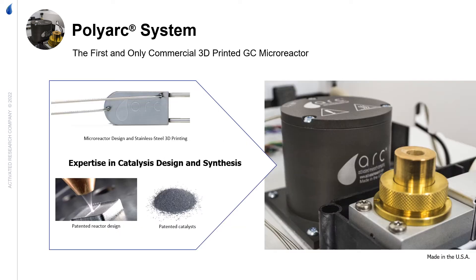The heart of the technology is shown on the left. It is a 3D printed microreactor — 3D printing allows the design to minimize dead space and peak broadening. The reactor is filled with a patented catalyst that results in a greater than 99.9% conversion to methane.